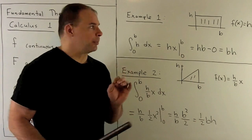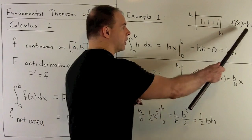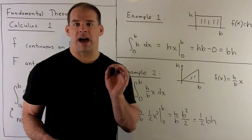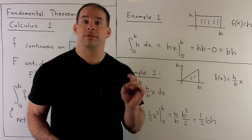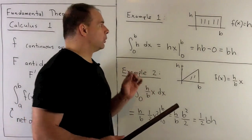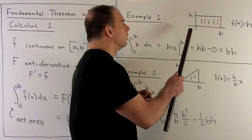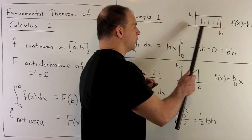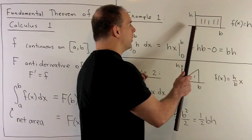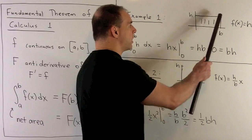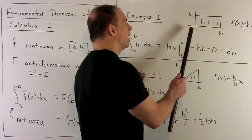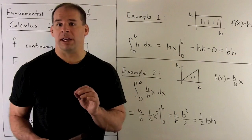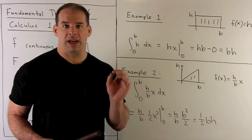First example: I'm going to use a constant function. We'll call f(x) equal to the constant h for height. Over the interval from zero to b, we have a rectangle with base of length b and height h, so we expect the area to be b times h.